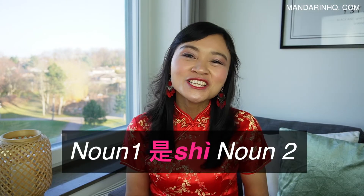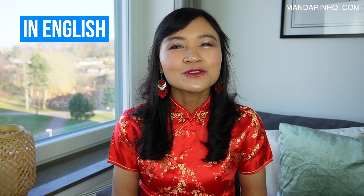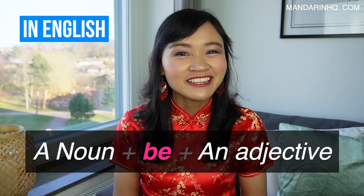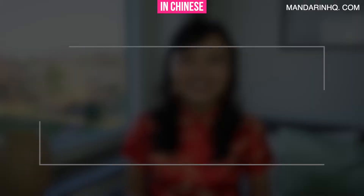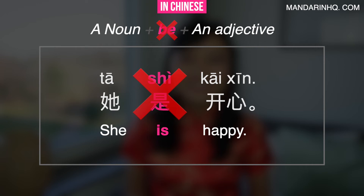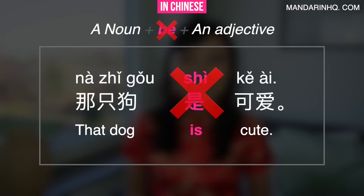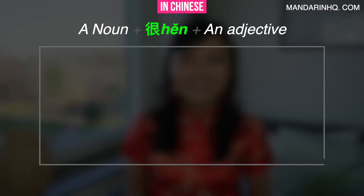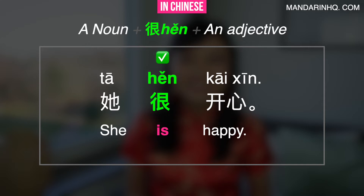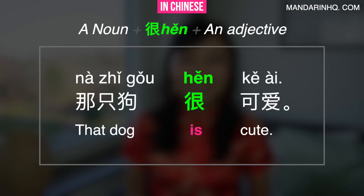We talked about connecting two nouns. Now in English, you also use the verb 'be' to connect a noun and an adjective — 'She is happy,' 'That dog is cute.' In Chinese, this is different. You don't say 她是开心 or 那只狗是可爱. In simple sentences like this, we normally use the word hěn instead of shì: 她很开心 and 那只狗很可爱.